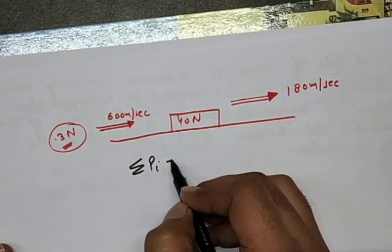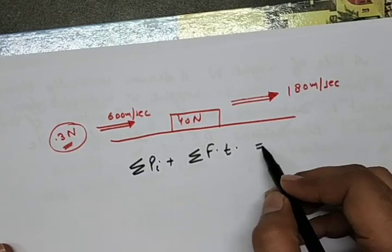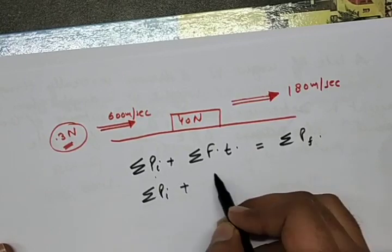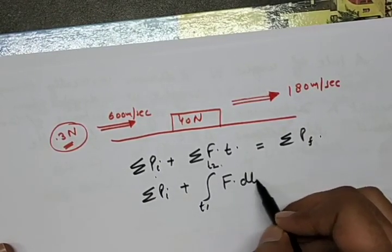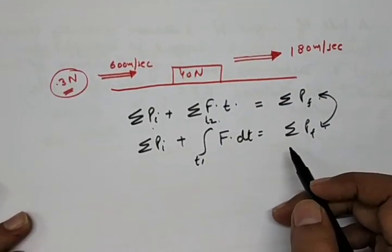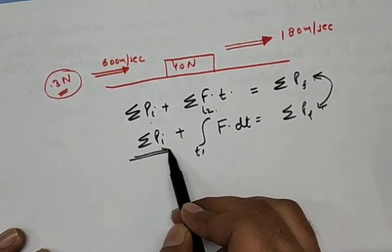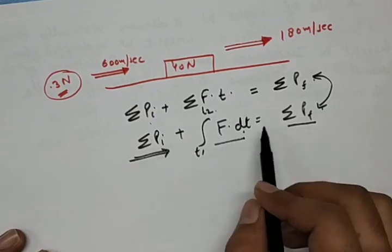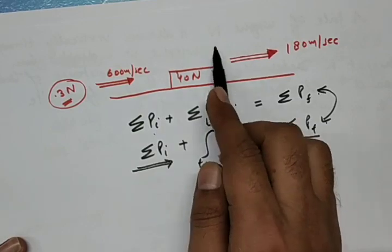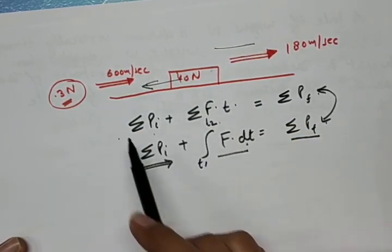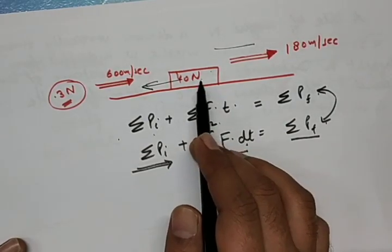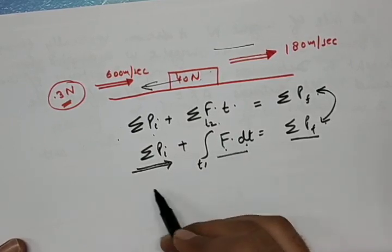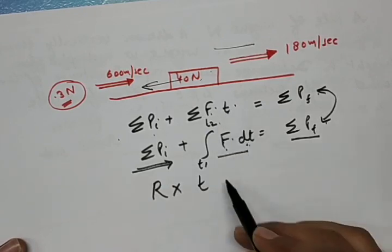The impulse-momentum principle states: summation of initial momentum plus summation of F·dt equals summation of final momentum. That is, the initial momentum plus impulse equals the final momentum. The force acting in the x-direction when the block is given some impulse is the frictional force, which equals mu times N. Let the frictional force be R, then R·t equals the change in momentum.